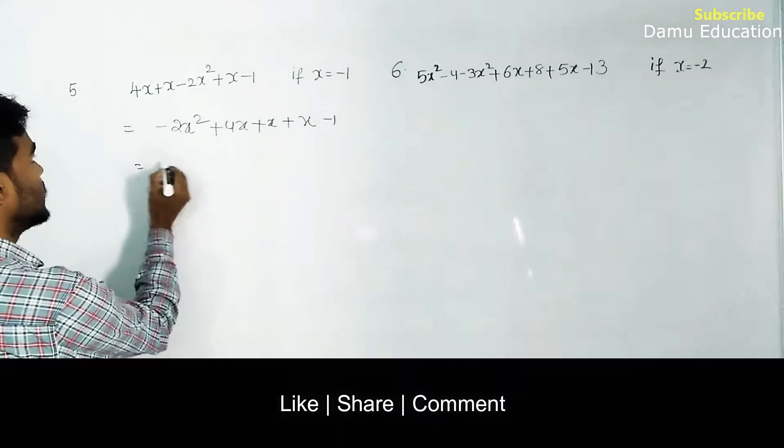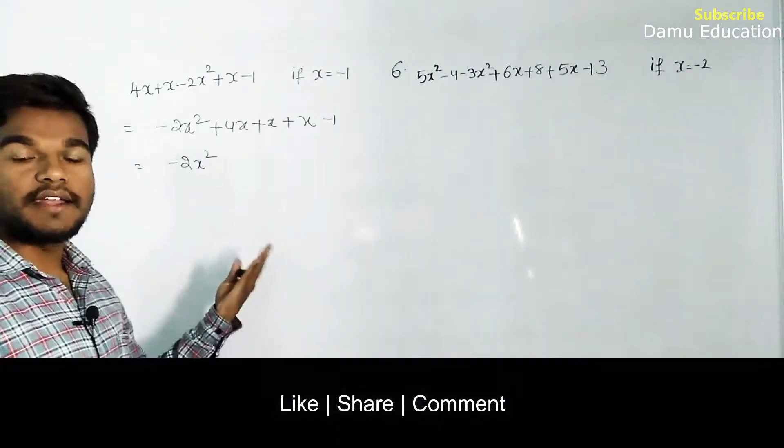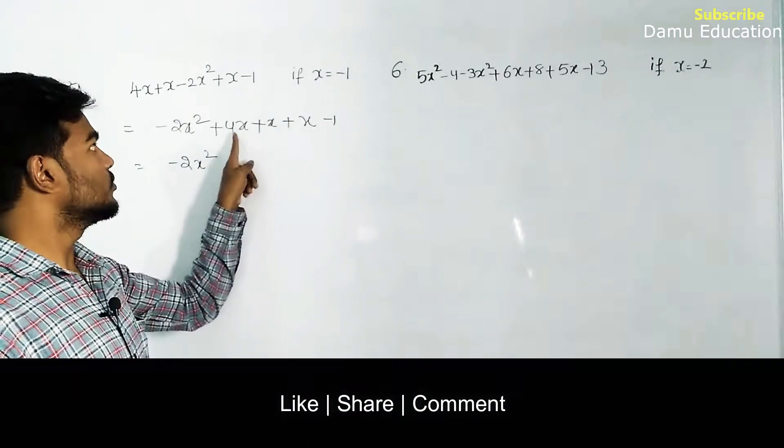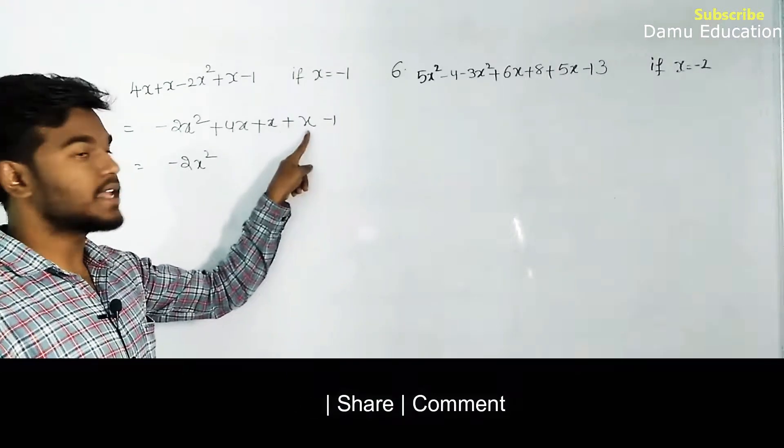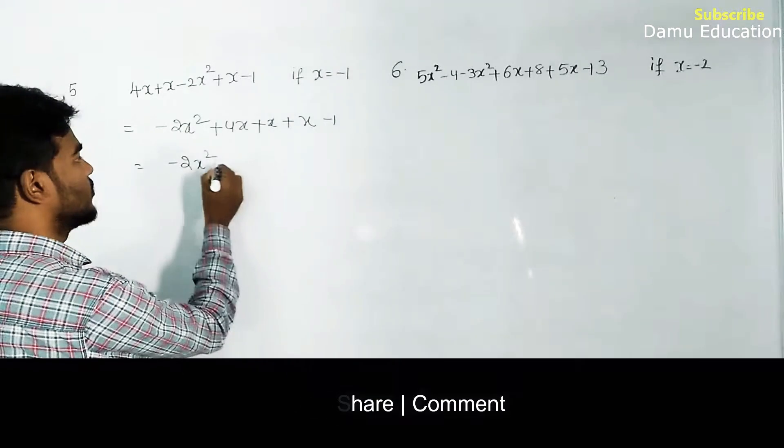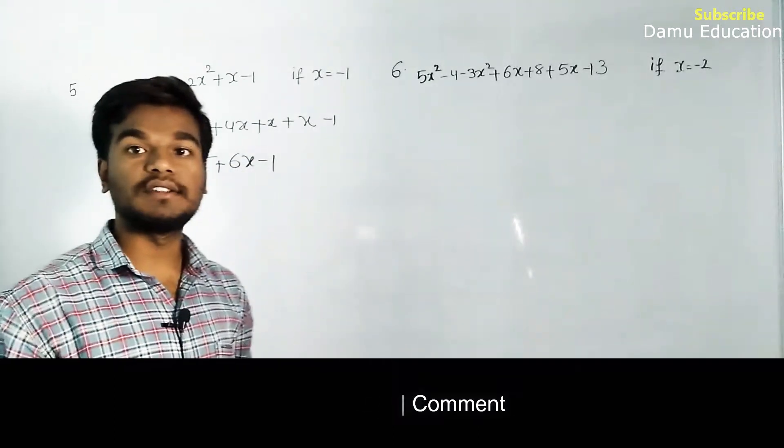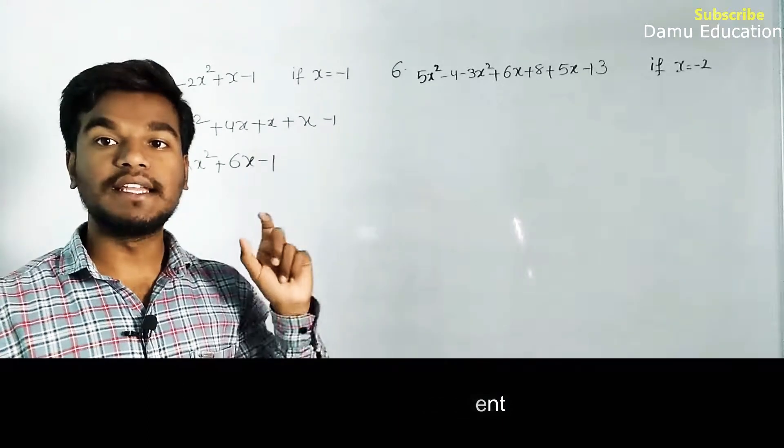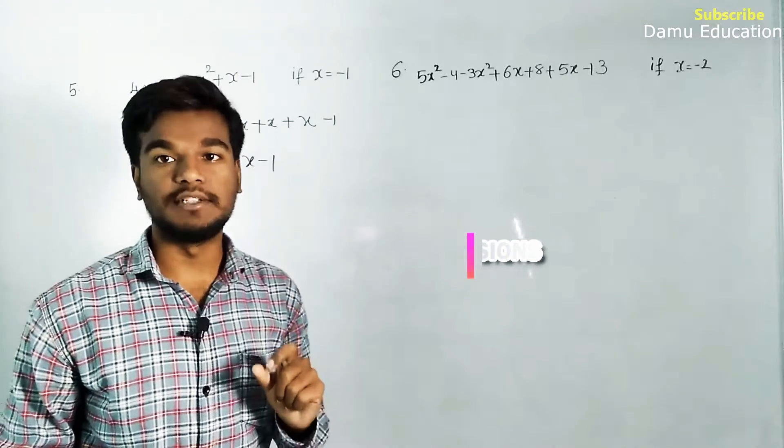Simplify: -2x² has no other x² terms. Then 4x + x is 5x, plus x is 6x. So 6x - 1. Simplification means the expression should not contain any like terms.